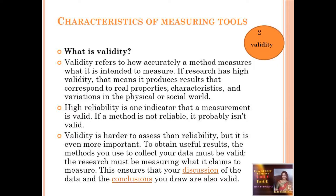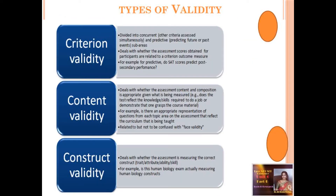And it may have no validity for indicating success in art or music. Thus, when appraising or describing validity, it is necessary to consider the use to be made of the results. There are different types of validity. Four types have been identified: content validity, predictive validity, concurrent validity, and construct validity.